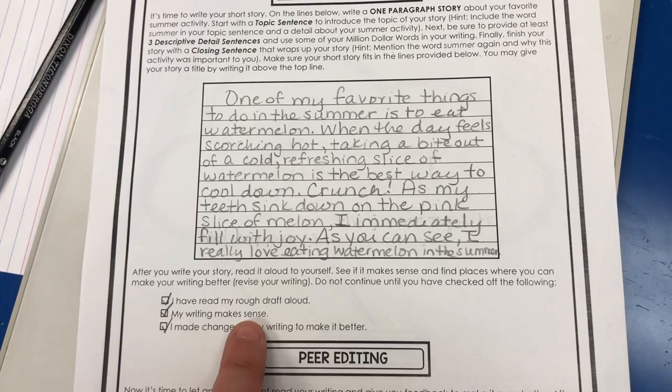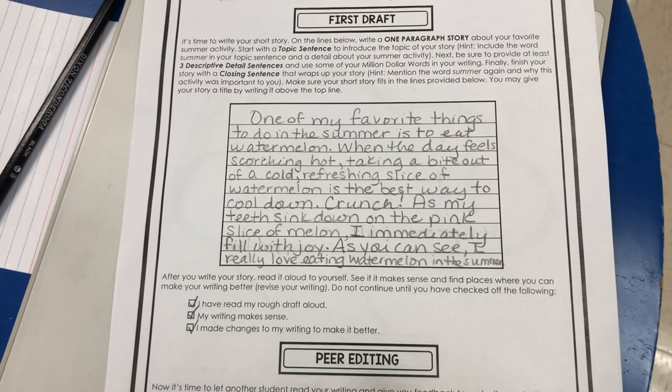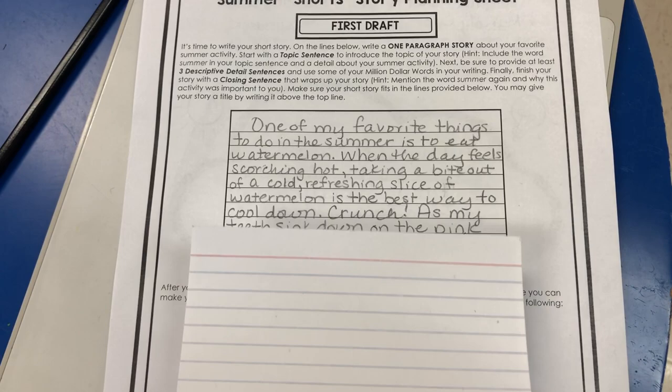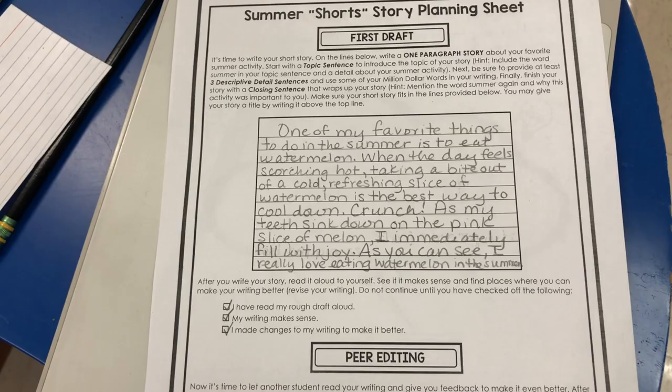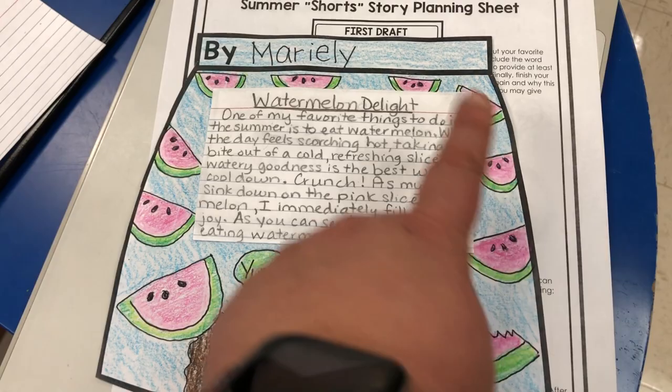Then on the back they can write their first draft. Here's my first draft, and then they read it out loud to see how it sounds, to make sure it makes sense, and to make changes as needed. Then they give it to a peer so that person can read it and give them a star and then a wish for their writing. So then the students came up and I would start reading their stories and then they were ready for an index card.